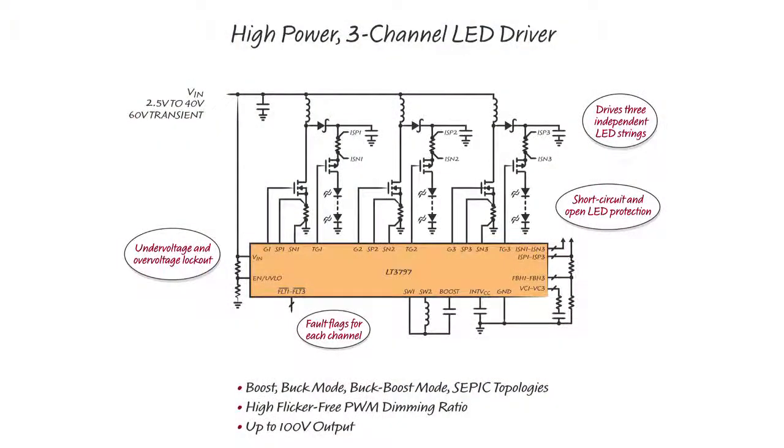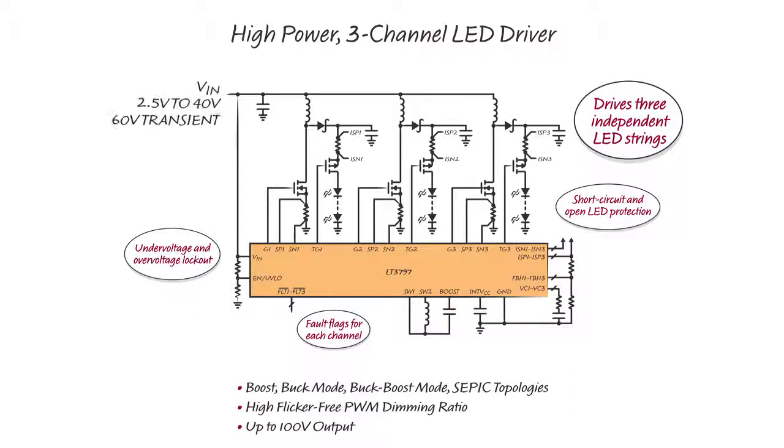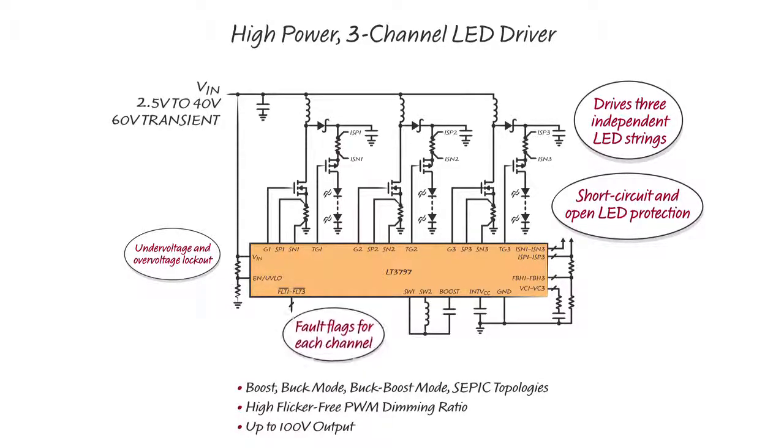The LT3797 is a 100-volt multi-topology LED driver that powers three independent LED strings from 2.5-volt to 40-volt input. It has short-circuit and open LED protection, as well as fault output flags for each channel.